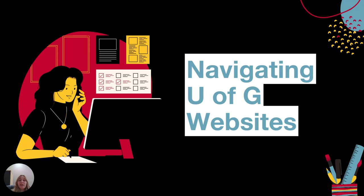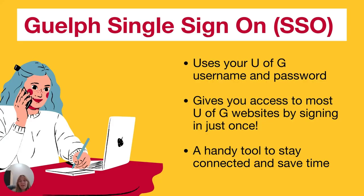Now let's talk about how you will navigate U of G websites. Even though most courses are in person, there are still multiple websites you'll be using as a student on a daily basis — and they're all very important to know. First, let's talk about single sign-on. This isn't actually a website per se, but it is important. After you accepted your offer, you would have gotten a single sign-on or SSO login — your username and password. They are extremely important because they give you access to all the important websites and apps you'll use, including Griffmail, CourseLink, WebAdvisor, Grifflife, the library website, Experience Guelph, and many more.